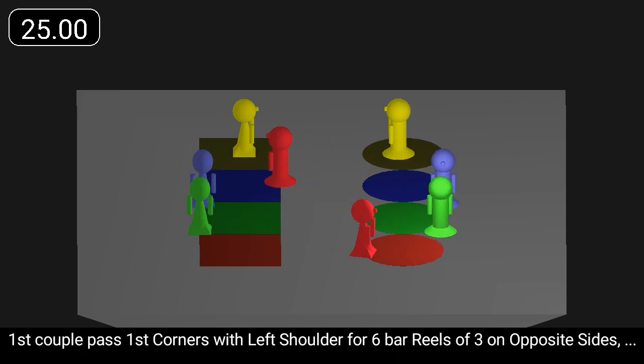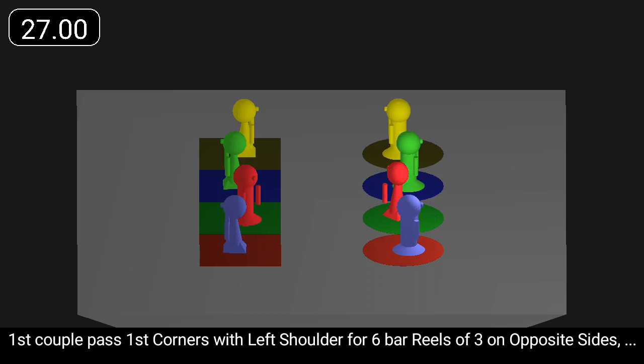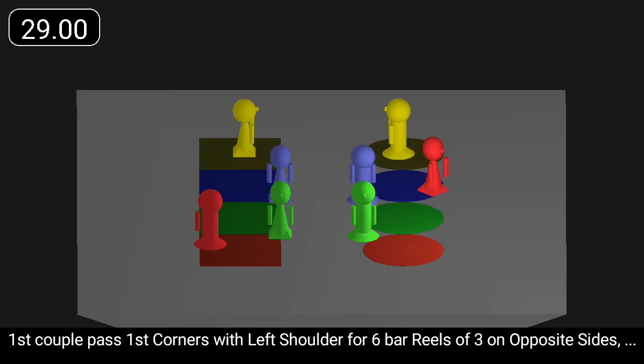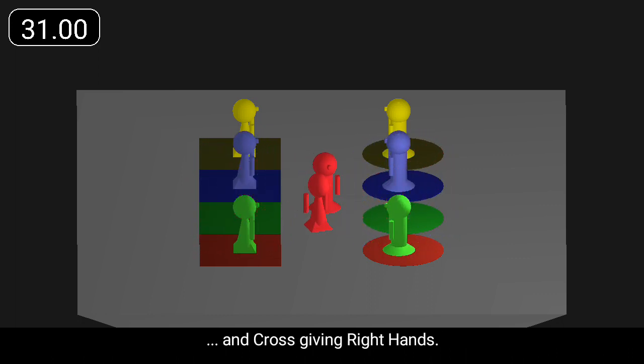First couple pass first corners with left shoulder for six-bar reels of three on opposite sides, and cross giving right hands.